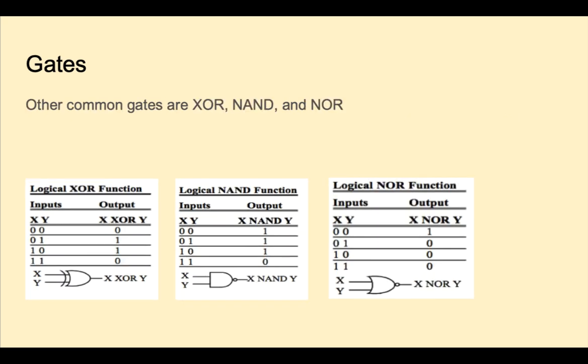Here are the symbols and truth tables for exclusive OR, NAND, and NOR. NAND is AND followed by NOT, and NOR is OR followed by NOT. NAND and NOR turn out to be useful because they're cheap to produce. Logic designs for AND, OR, and other gates can be converted into NANDs and NORs for implementation.